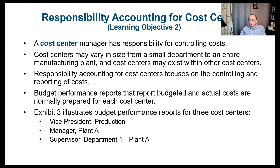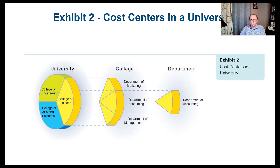Budget performance reports that show budgeted and actual costs are normally prepared for each cost center. In exhibit three, we'll see budget performance reports for three cost centers: the vice president for production, the manager for plant A, and a supervisor for department one of plant A. Before that, exhibit two shows cost centers in a university example. We have a university with three colleges — engineering, business, and arts and science. Within the college of business, we have marketing, accounting, and management departments, each of which can be considered a cost center.